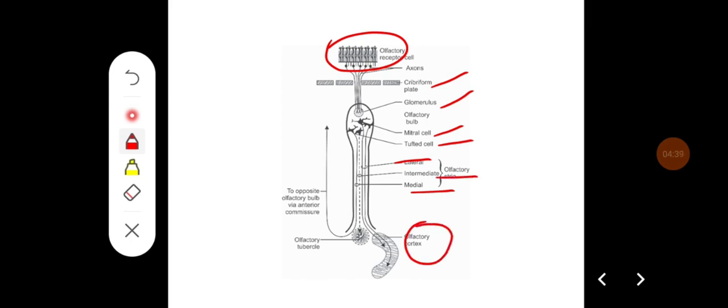The intermediate, it is going to end in the olfactory tubercle, that is the limbic system and the medial stria, it crosses over to reach to the opposite olfactory bulb and anterior commissure.